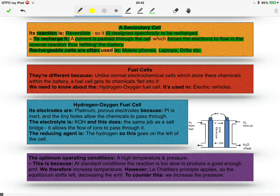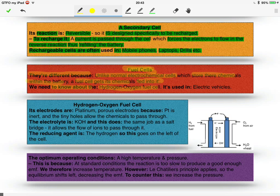Now we have fuel cells. These are different because unlike normal electrochemical cells which store their chemicals within the battery, a fuel cell gets its chemicals fed into it. What this basically means is the chemicals come from an external source. There's one particular type of fuel cell we need to know about, and this is the hydrogen-oxygen fuel cell, used in electric vehicles.